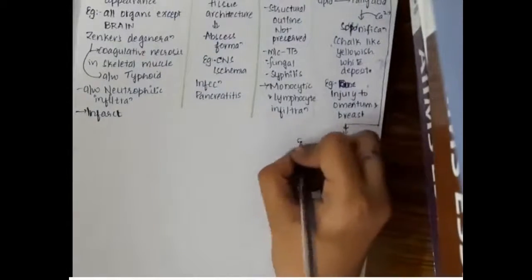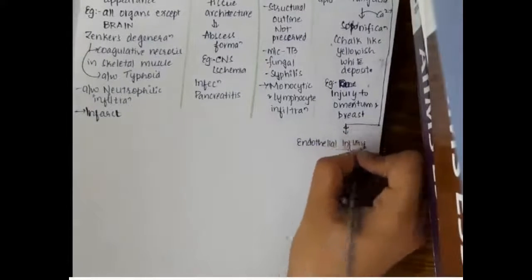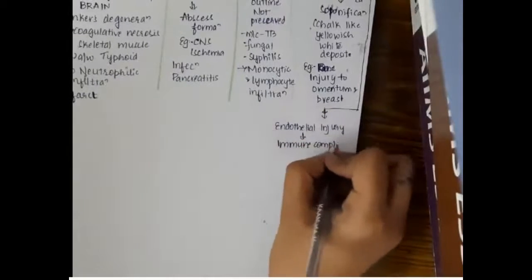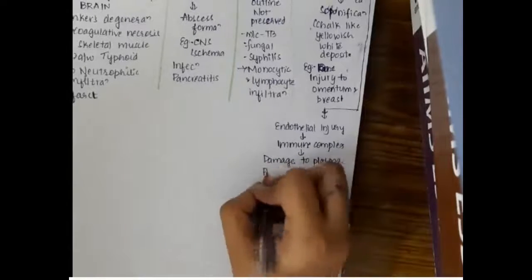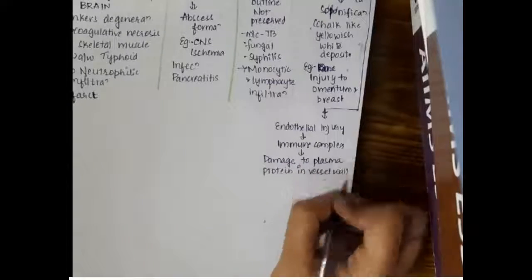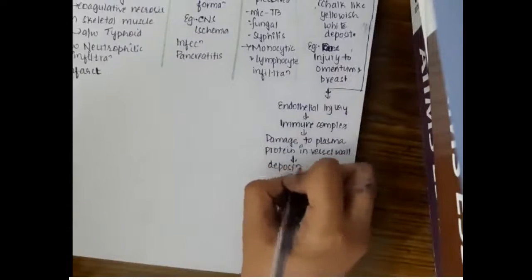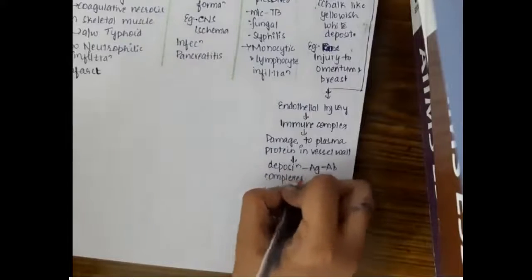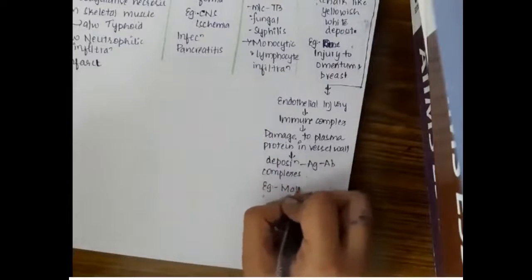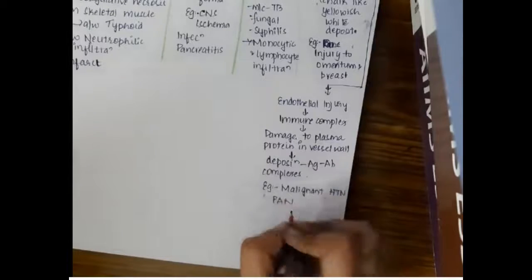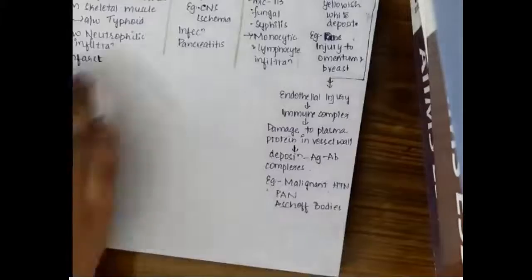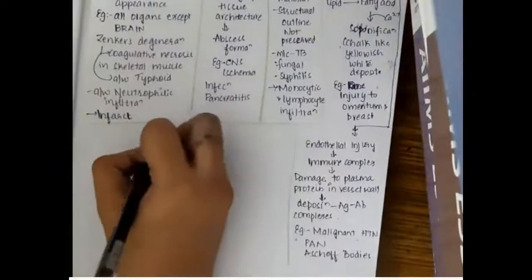The final type of necrosis is fibrinoid necrosis. This fibrinoid necrosis occurs mainly in endothelial injury. This causes immune complexes to form. These immune complexes will damage the plasma proteins which are present in the vessel wall, and these immune complexes (antigen and antibody complexes) will deposit in the vessel wall resulting in fibrinoid necrosis. This type is seen in malignant hypertension, polyarteritis nodosa, and Aschoff bodies.